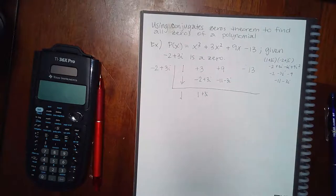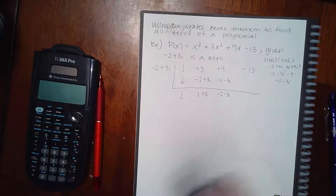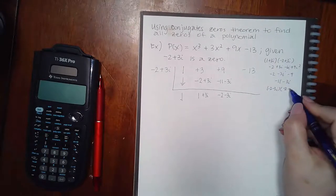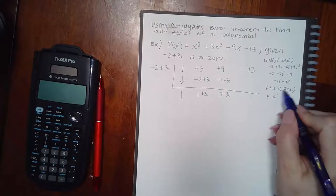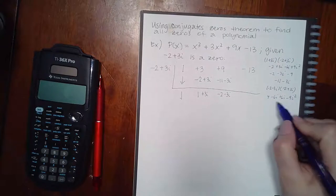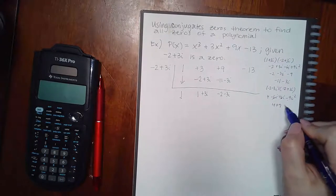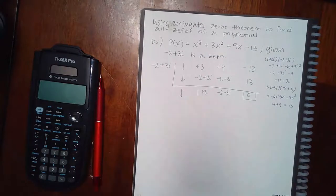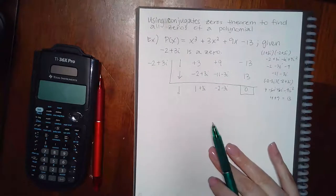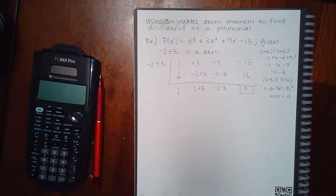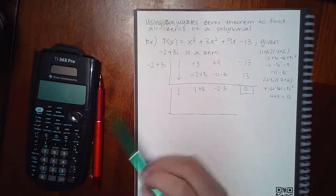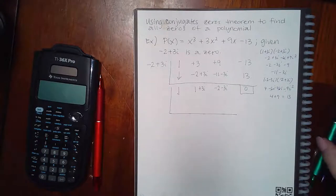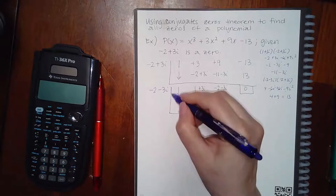That negative 11 minus 3i goes in, and combining gives negative 2 minus 3i. Then multiplying negative 2 minus 3i times negative 2 plus 3i gives 4, negative 6i, positive 6i, and negative 9i squared — which becomes positive — giving 13. So the remainder is 0. We can't use the quadratic formula because the coefficients aren't real, so we use the conjugate zeros theorem: if negative 2 plus 3i is a zero, then negative 2 minus 3i is also a zero.